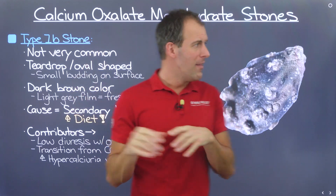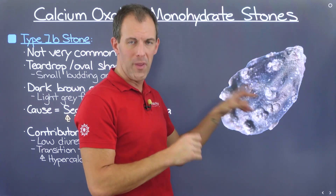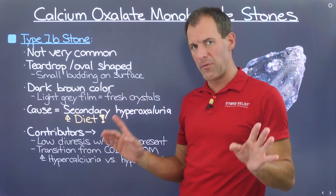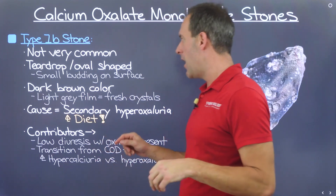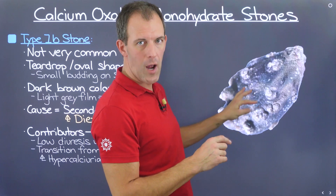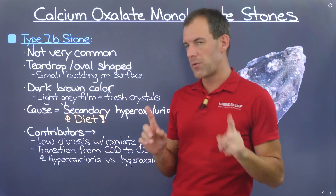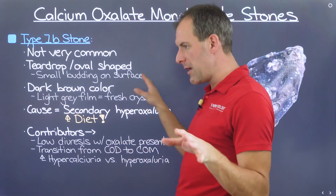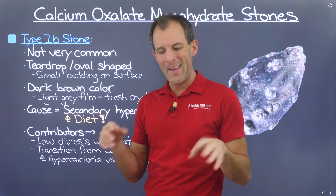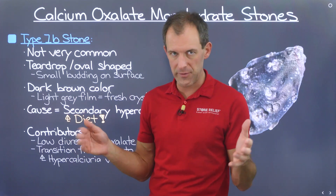Type 1B stones look kind of similar to the type 1A stone we saw previously, and they form for pretty common reasons. Generally, the type 1B stone is mostly marked by a teardrop or oval shape. You'll notice the same kind of budding structure, the same type of coloration, and there's also the possibility of a light gray film appearing on the surface during an active stage of crystallization.